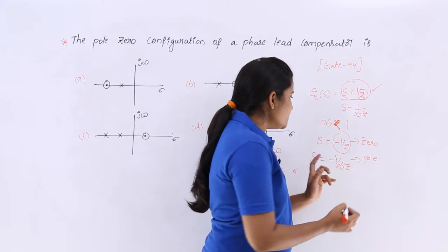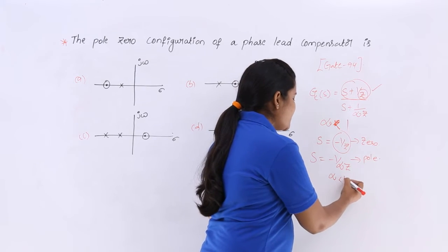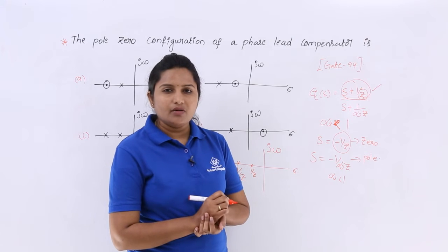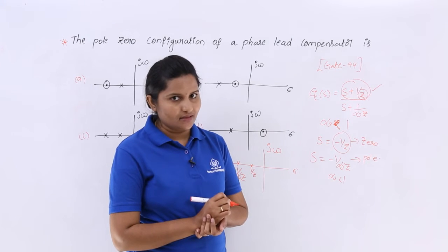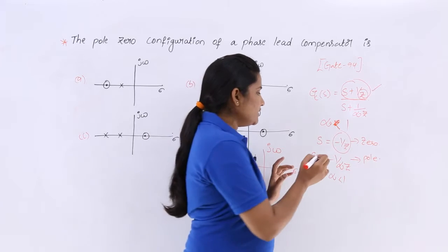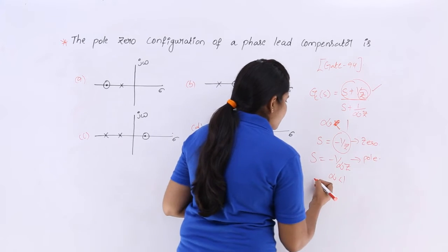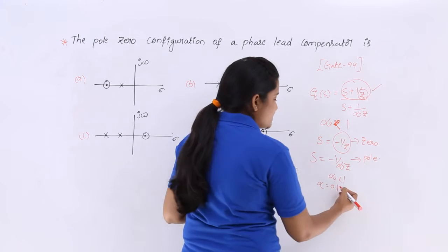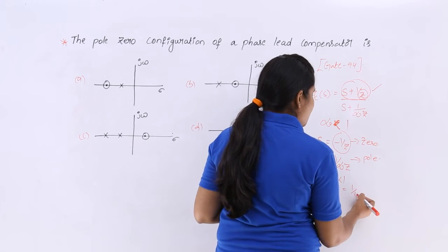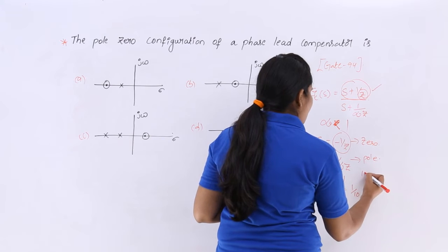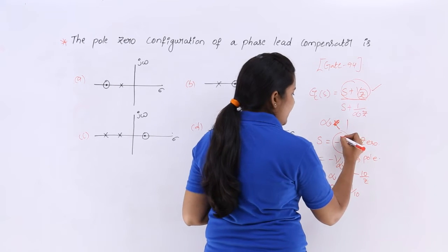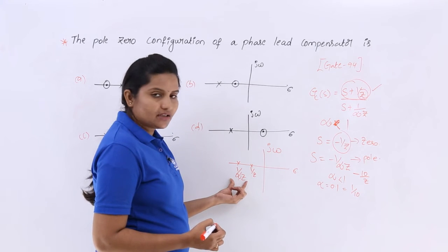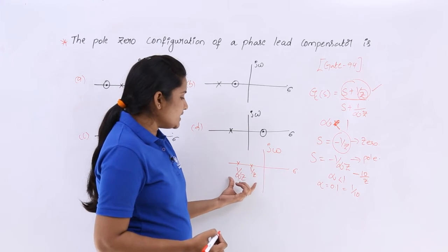Why? Because why I am considering like that? If alpha is less than 1, alpha is less than 1 means it may be 0.1, 0.2, 0.3 like that. Then here for example I am having alpha is equivalent to 0.1. Then this is equivalent to 1 by 10. That means I will get minus 10 by Z here and 1 by Z here.